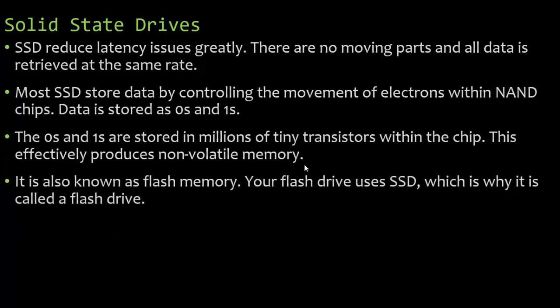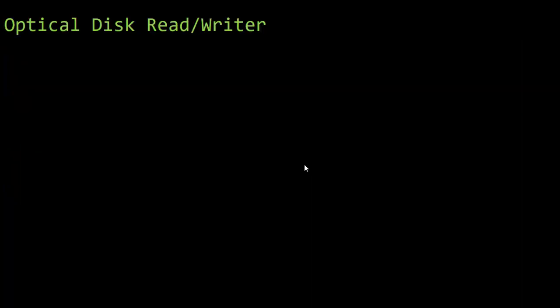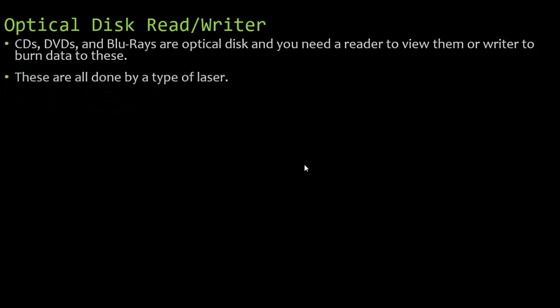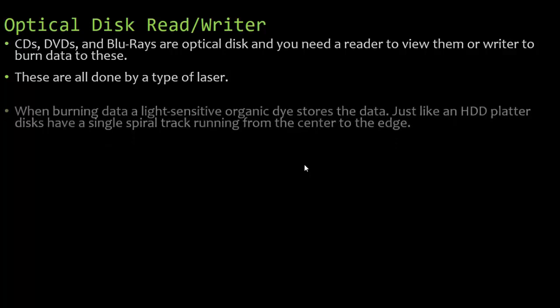We also call this flash memory. Your USB flash drive uses a solid state drive, which is why it's called a flash drive — because it is flash memory. Then we have an optical disk reader or writer. These are your CD burners and DVD burners which also play CDs and DVDs, as well as Blu-rays. These are optical disks and you need a reader to view them or a writer to burn data to them.